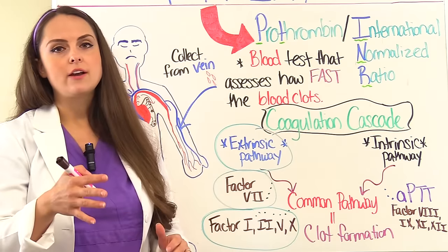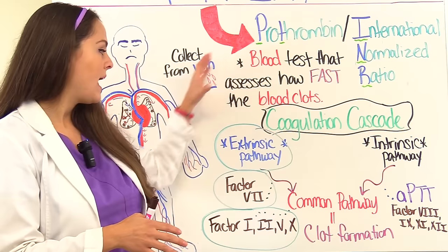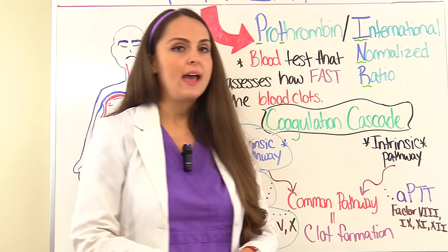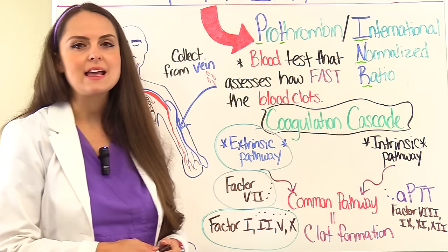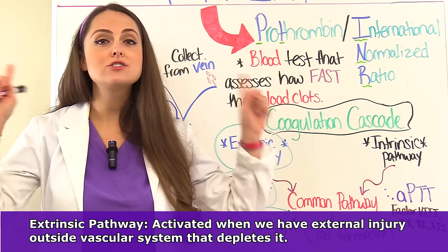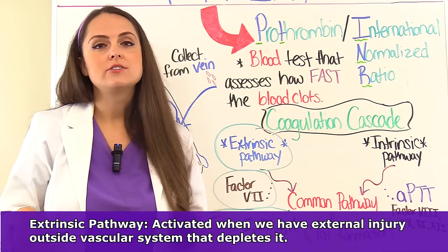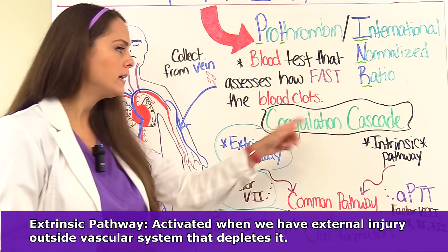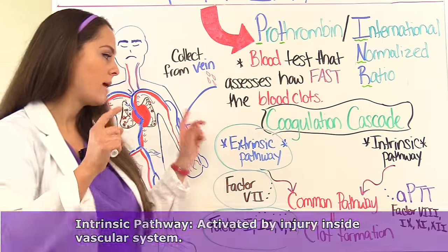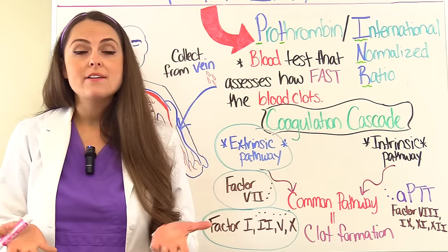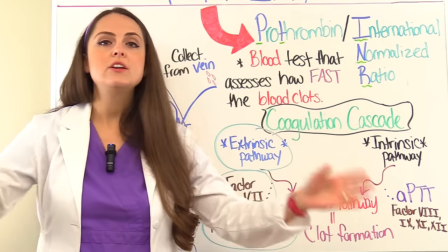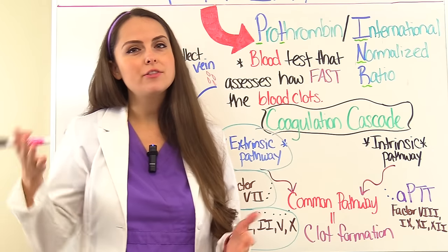The PT INR is going to check the extrinsic pathway. The intrinsic pathway is where the APTT comes into play. To quickly review: the extrinsic pathway is activated when we have external injury outside of the vascular system; the intrinsic pathway is activated when you have injury inside the vascular system. Regardless of the cause, they'll meet together at the common pathway and a clot will form. Depending on which pathway is activated, different clotting factors are activated — and there are about 13 clotting factors total.